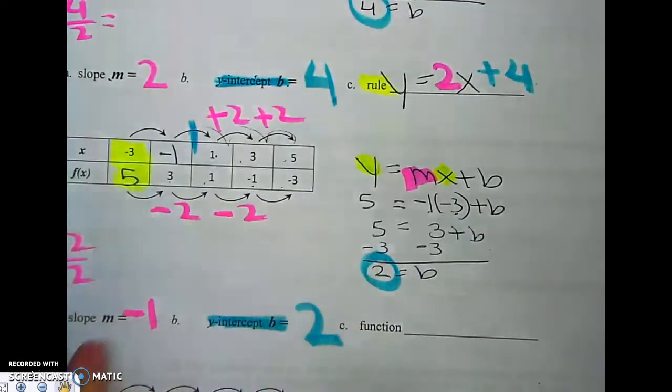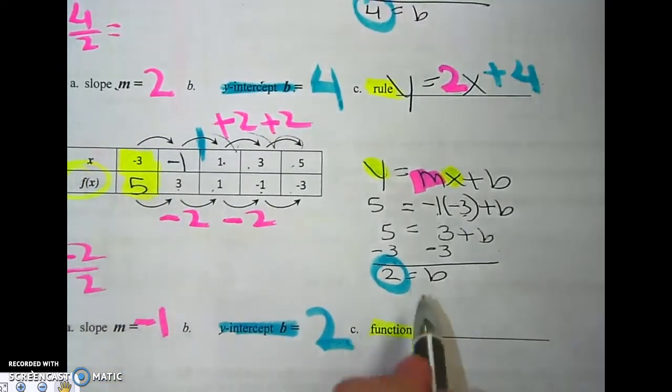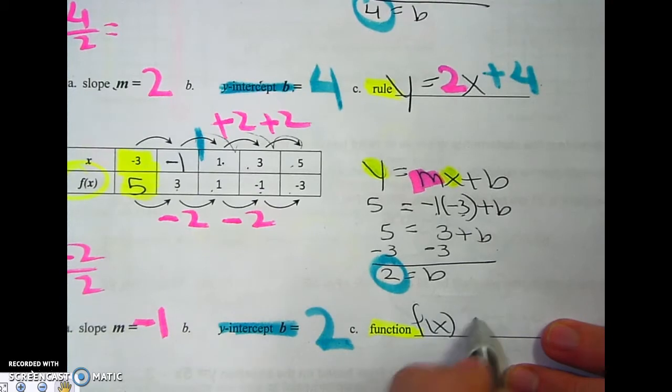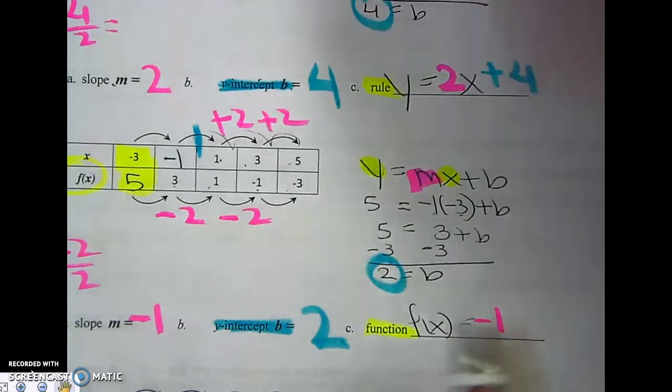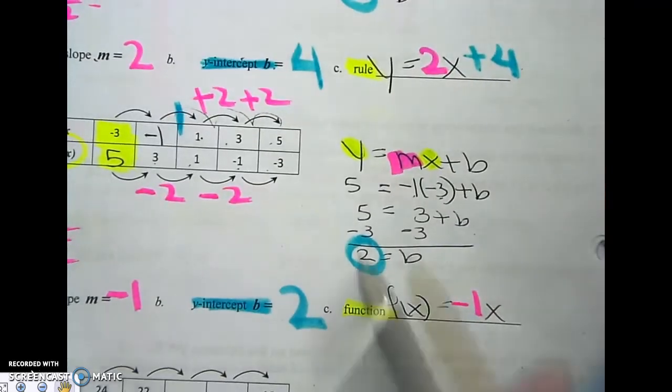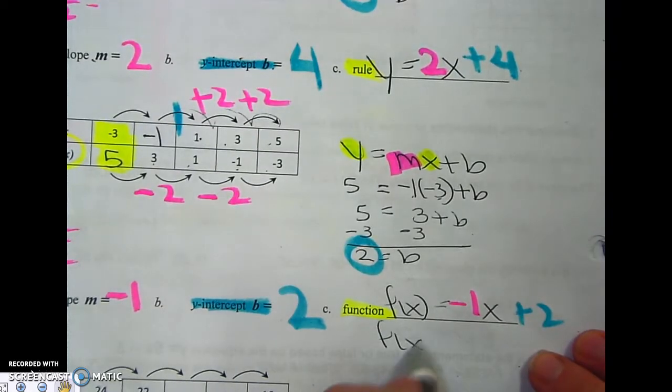Now I can do my function. Since they're calling it a function this time, and it's f of x, I have to do f of x. Negative 1, x plus 2. If I want to be super fancy, I'll write this.